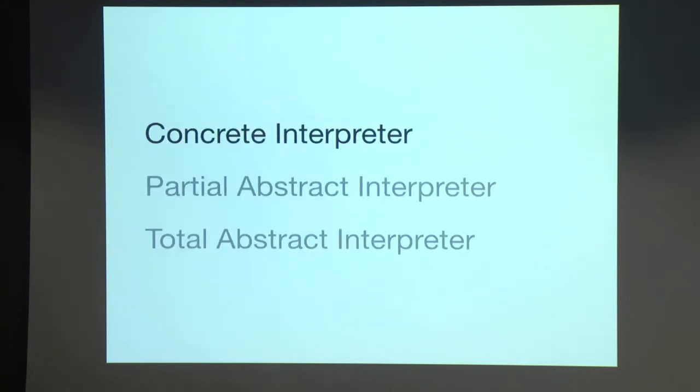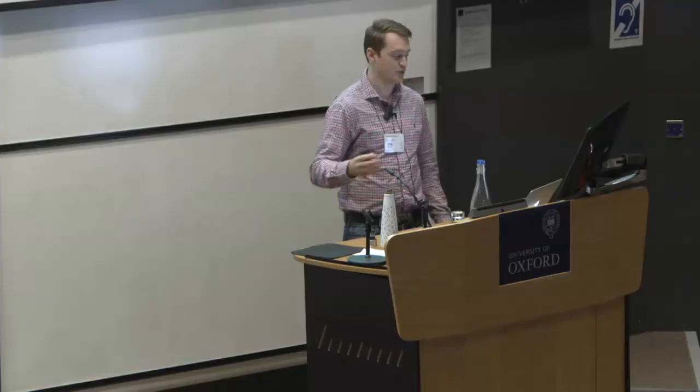So I'm going to show you this technique by example. We're going to start with a concrete interpreter that's non-standard in just a few ways. I'm going to show you a partial abstract interpreter. And I mean partial in the sense that it doesn't always terminate. But it's an easy point to get to. And then I'll show you this caching fixed point algorithm to get a total abstract interpreter.